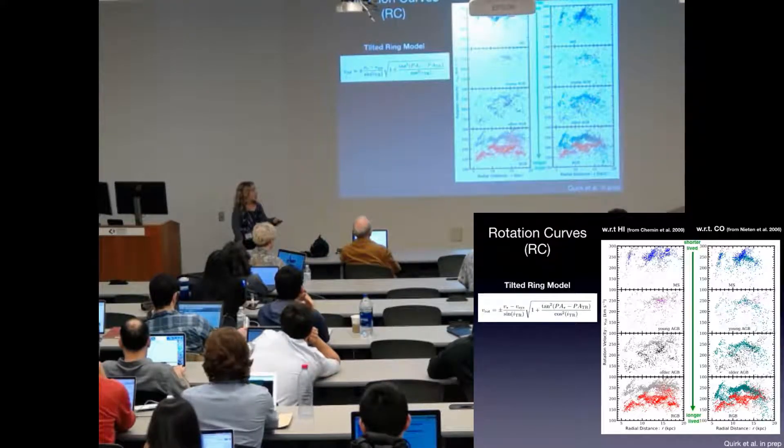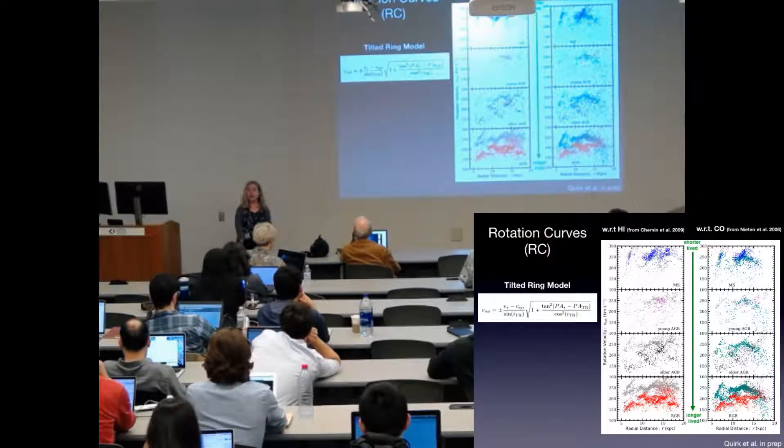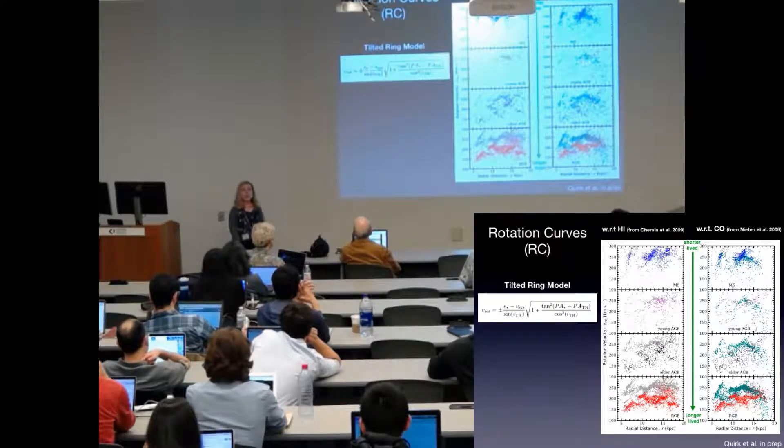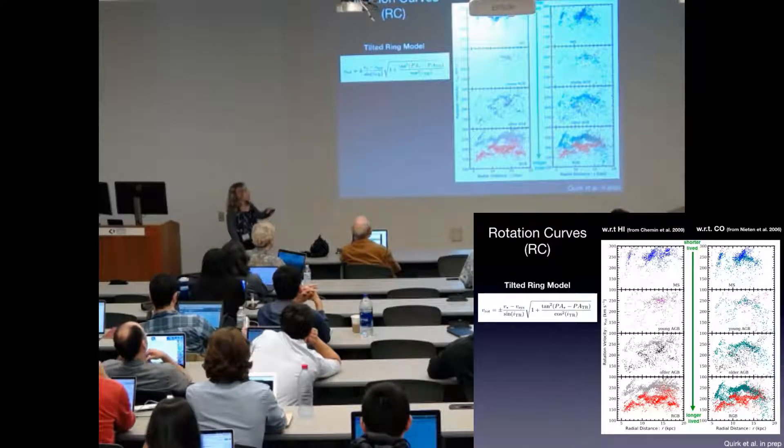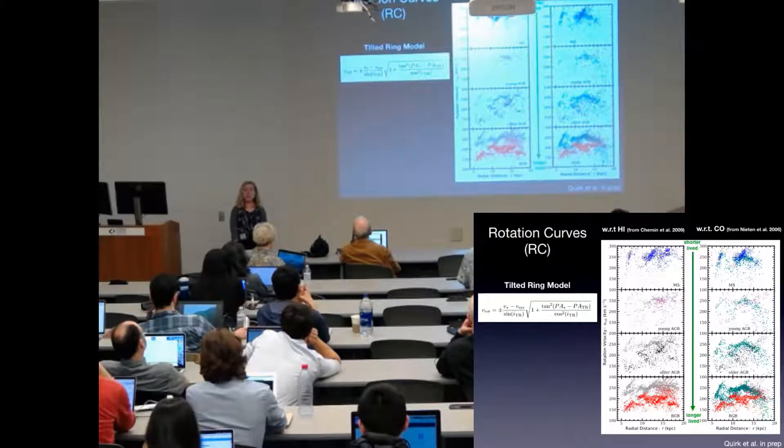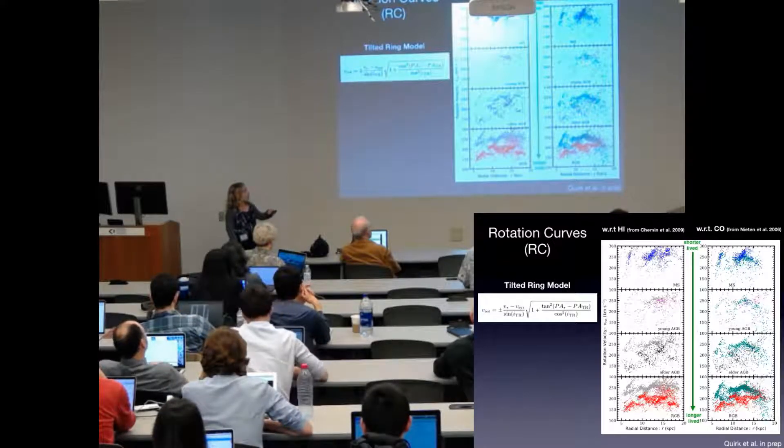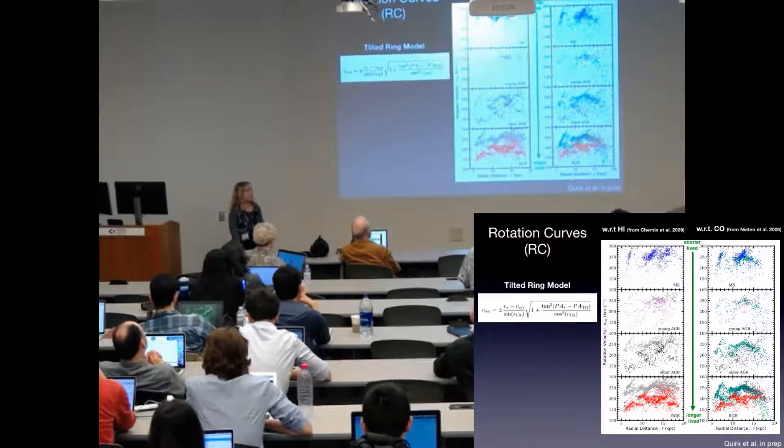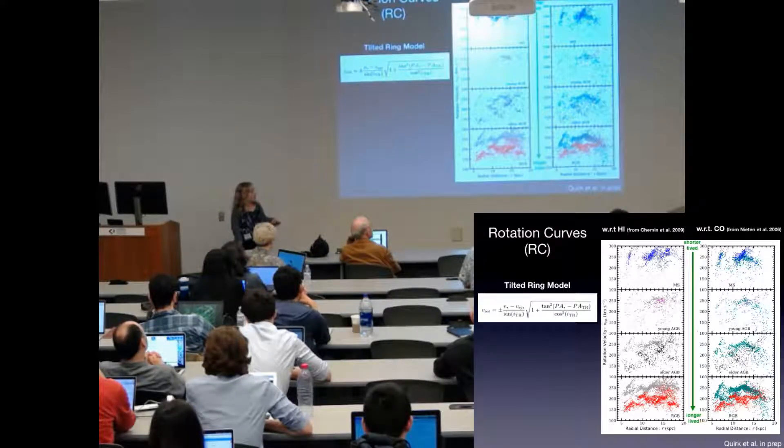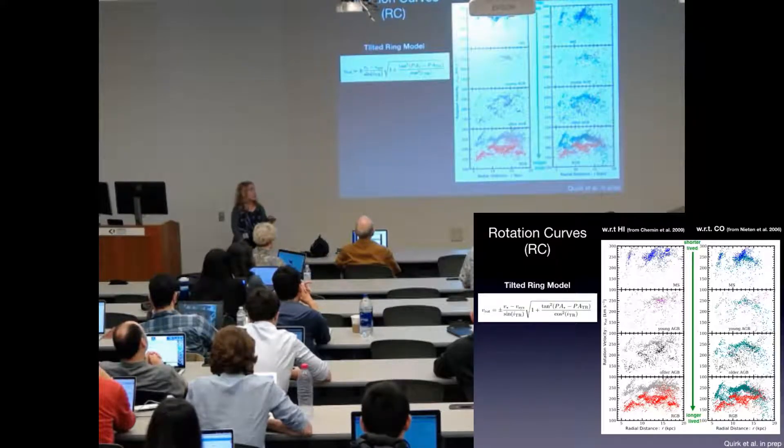Because I am studying asymmetric drift, I want to compare these rotation velocities with velocities of gas. And I do that with two different types of gas. This first set of rotation curves also has H1, or neutral gas, from Laurent Chemin in 2009, represented by the gray points in each rotation curve. The second column is a comparison to molecular CO gas, which was collected by Nathan et al. in 2006.